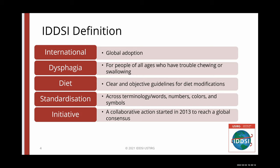It's dysphagia, meaning it is intended for people who have trouble chewing and swallowing. It's a diet guideline for describing texture modified diets and drinks that are appropriate for people with dysphagia. It's standardization of diet orders to simple words that translate well. Each diet has standard terminology — words, numbers, colors, and symbols. It's an initiative that started in 2013 to reach a consensus around the world on how to identify, describe, prepare, and serve safer food and liquid textures for people with dysphagia.